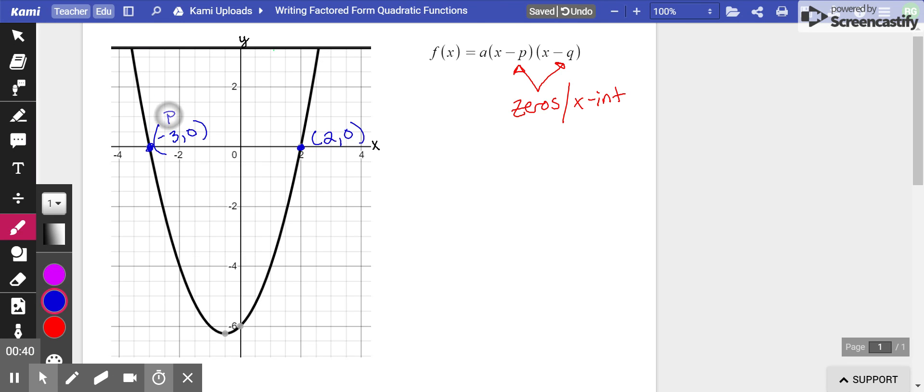The first one is P, so in this case P equals negative 3. The second one is Q, so in this case Q equals 2.